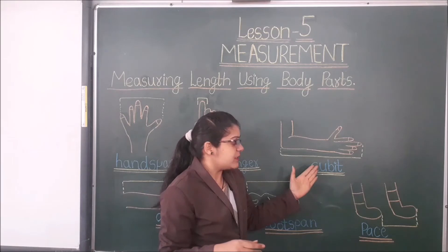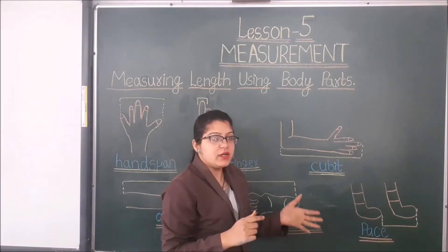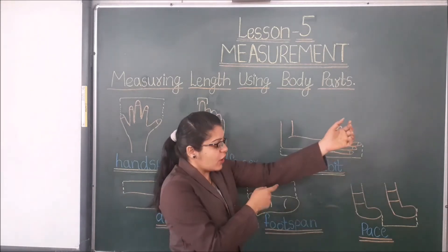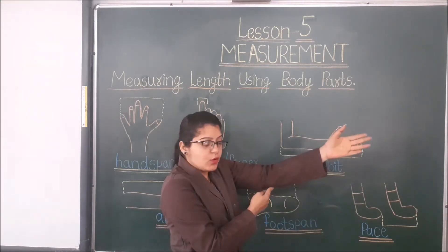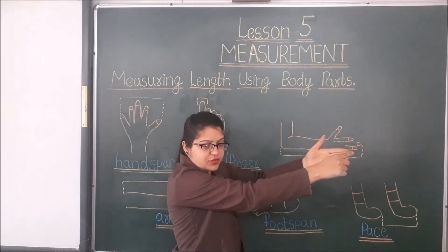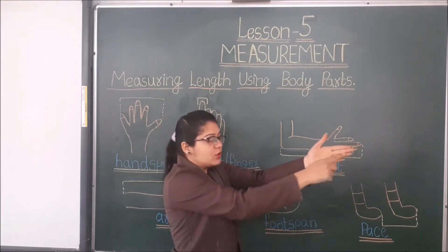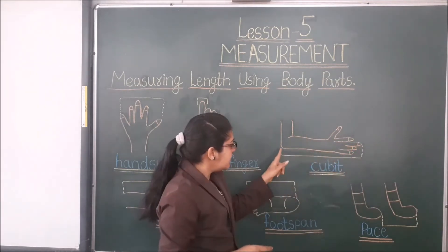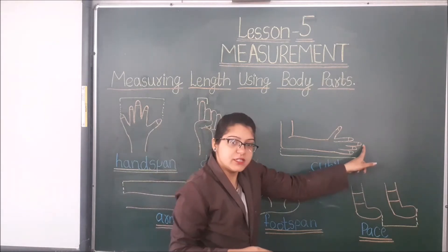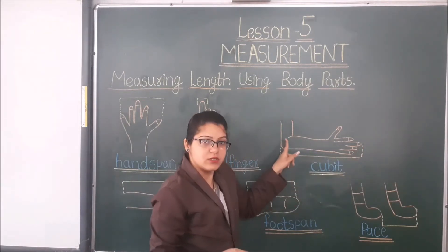The next is cubit. What is cubit? Students, cubit is measured from our elbow to the middle finger. So, this is cubit — from elbow to the middle finger.